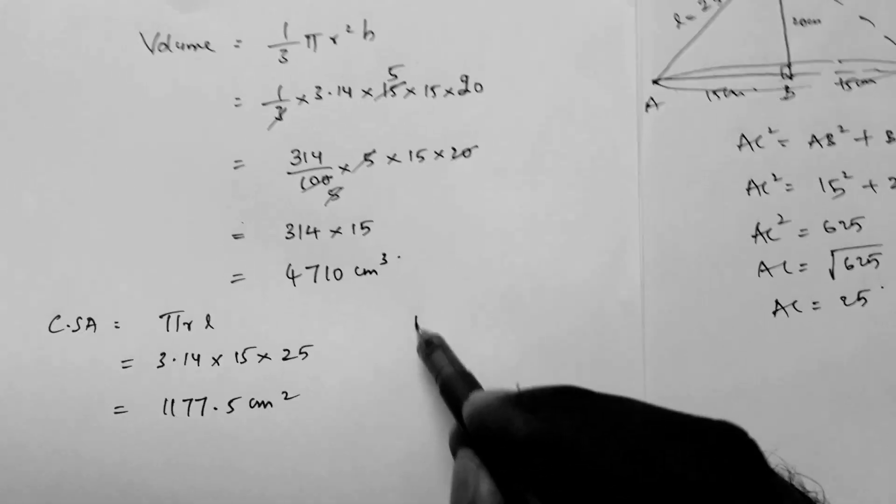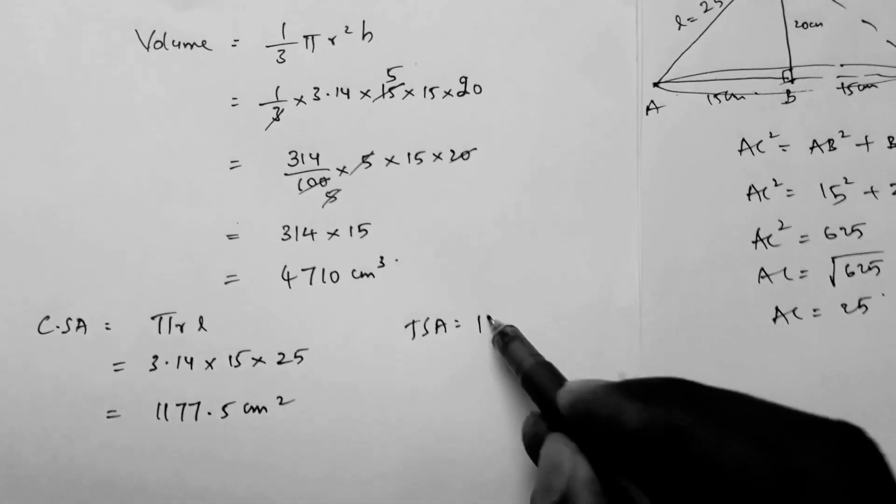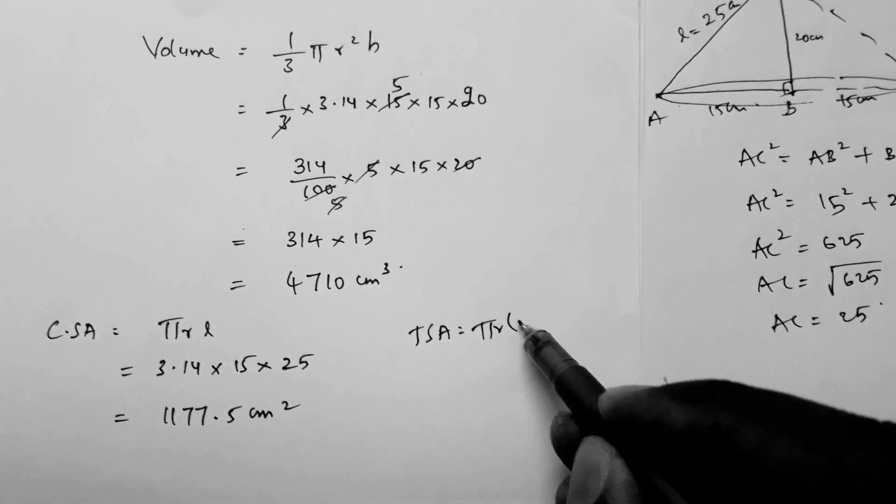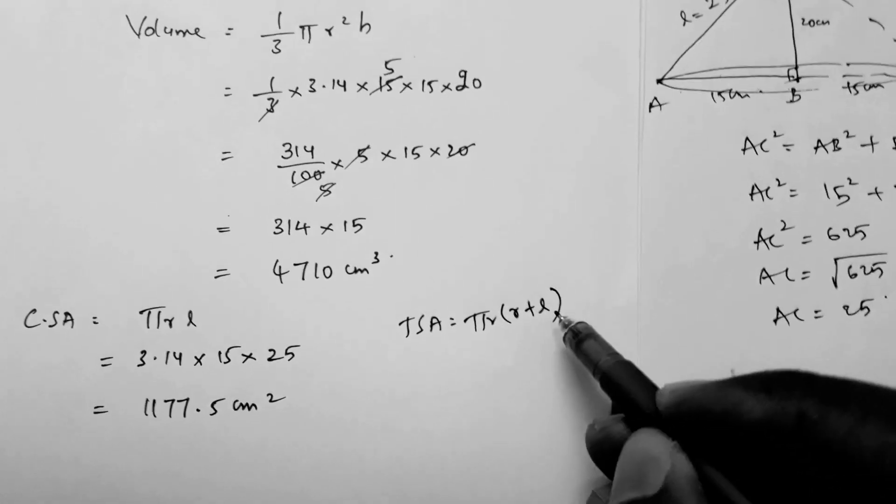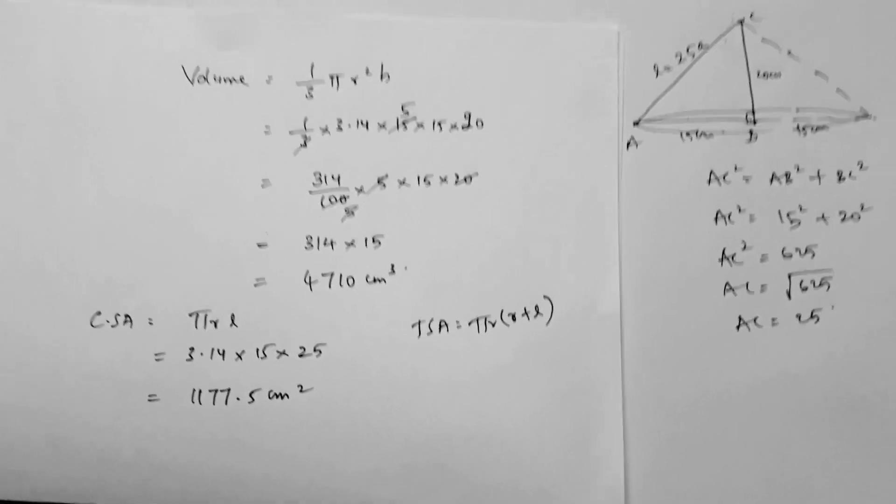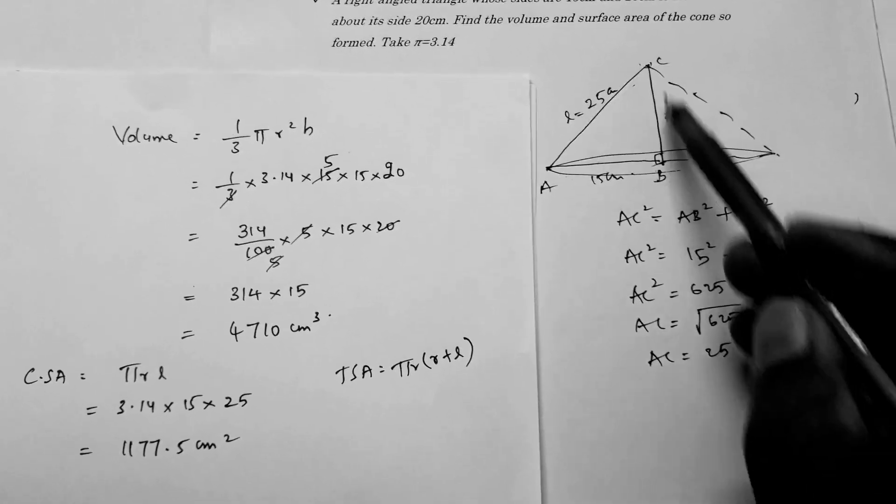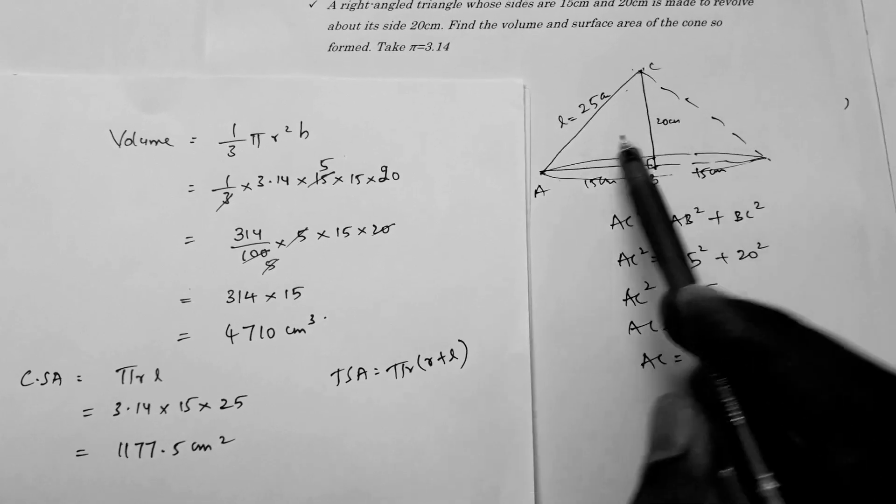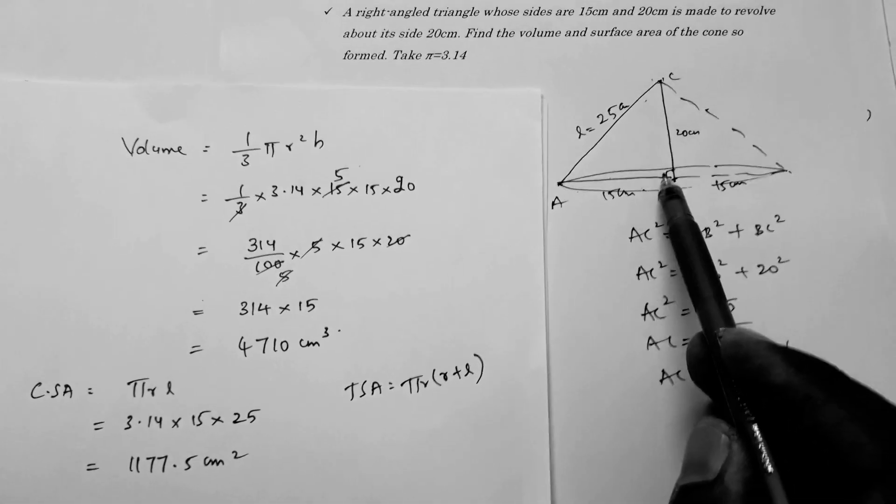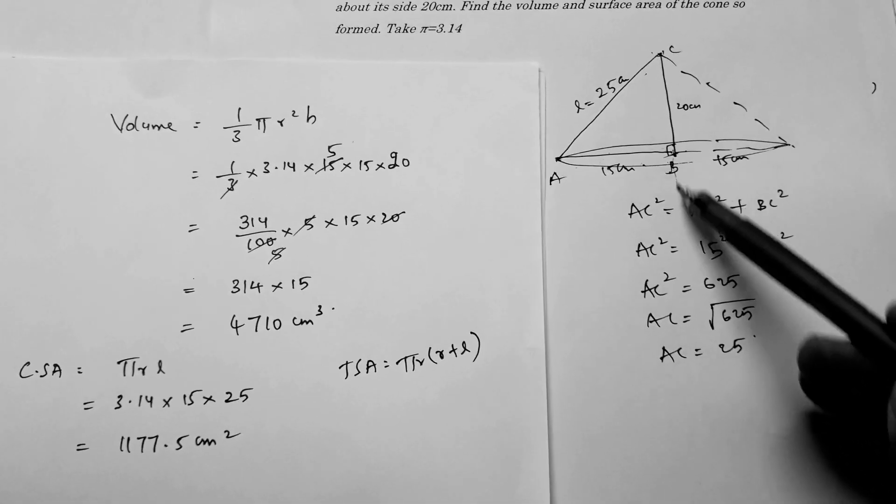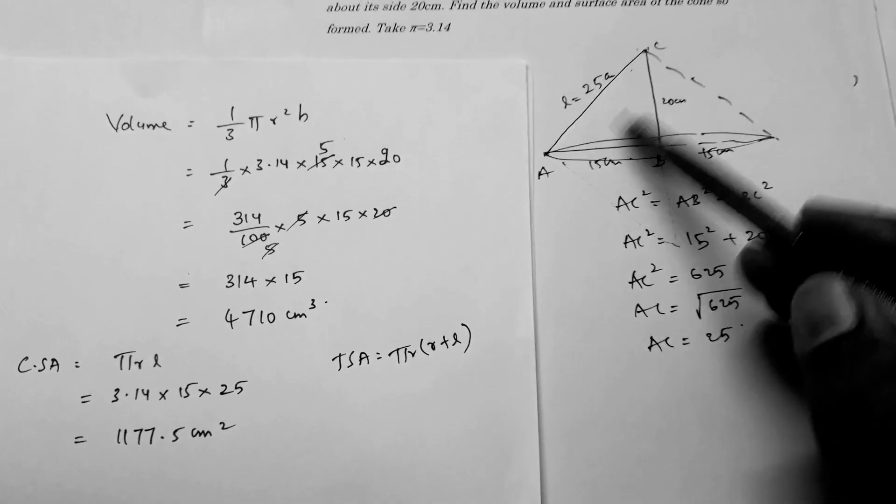If you need the total surface area, that is πr(r + l). In this way you can calculate this problem. When it's revolved along the side 20cm, we'll get a single cone. If it's revolved along its side 15cm, we'll also get a single cone in this way.